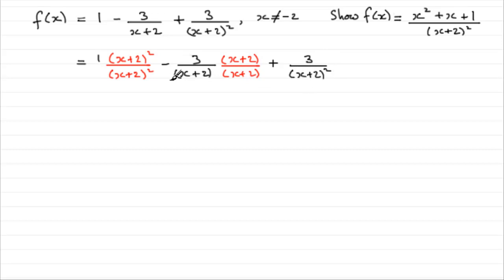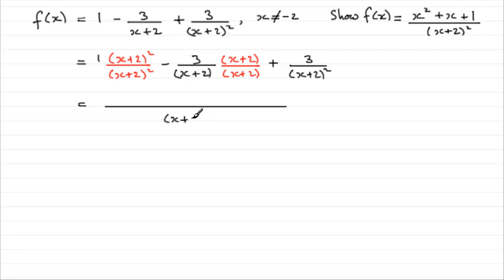So we've got everything over the same denominator, x plus 2 all squared. We can put one big long line and write x plus 2 all squared as the common denominator. On the top we have: 1 times x plus 2 all squared, written as x plus 2 times x plus 2; then minus 3 times x plus 2; and finally plus 3.